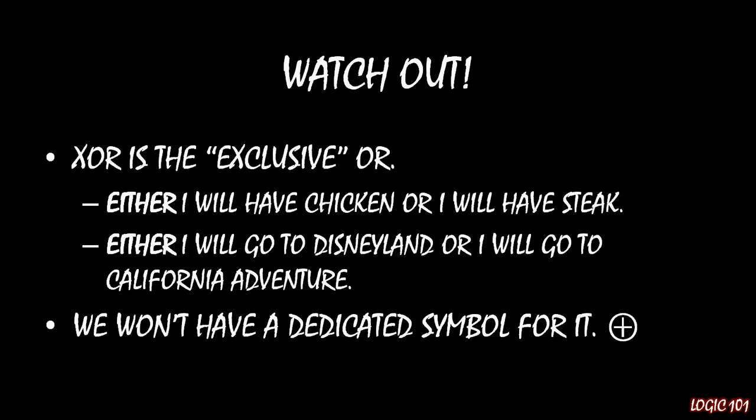The second example on screen: 'Either I will go to Disneyland or I will go to California Adventure.' That means I don't have time for both, so I'm going to one — not both. Now for this course, we're not going to have a dedicated symbol for the exclusive OR, the XOR. Your textbook or professor might use a circle with a cross for it, but we can avoid the extra symbol by representing XOR a different way using the conjunction operation, which we'll cover soon.